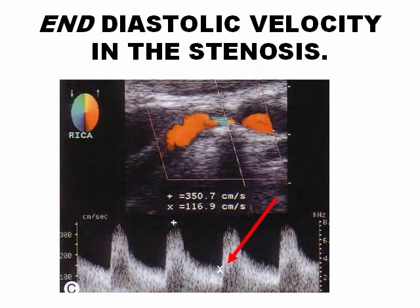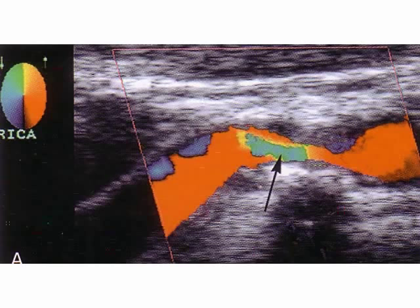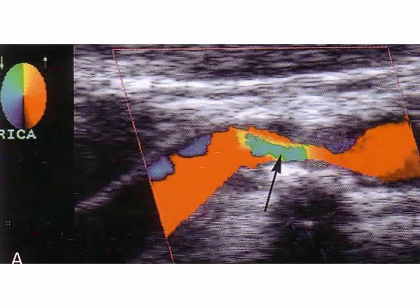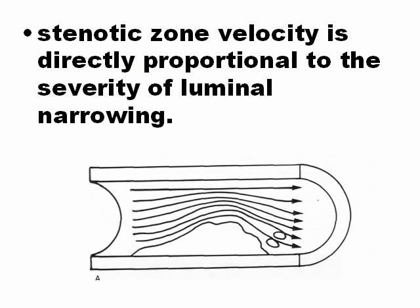The end-diastolic velocity is also elevated — for example, 116 cm per second. Normally diastolic velocity is around 20 cm per second, not as high as 116. Color Doppler can show the stenosis area, and you can also see a change in color — this is aliasing. Color Doppler also has aliasing: when blood velocity is too high, the machine displays the color in reverse. The stenotic zone velocity is directly proportional to the severity of the luminal narrowing, and that is how the doctor makes and quantifies the diagnosis of stenosis.